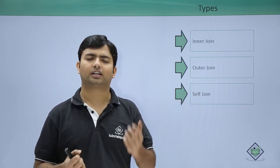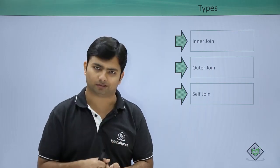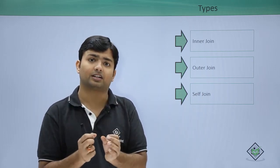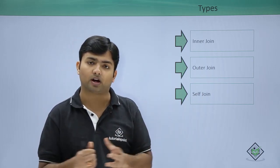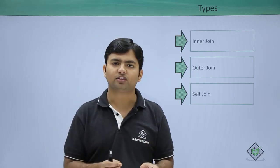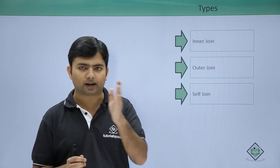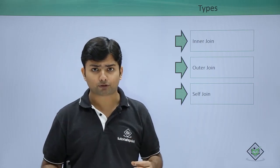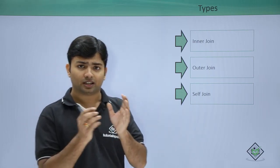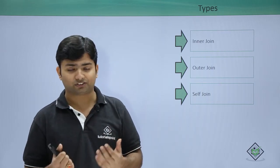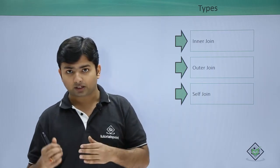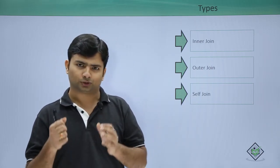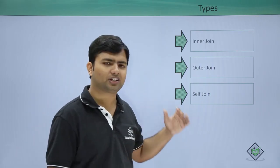A self join is a join where a table is joined with itself. You have to logically split the data of one table into two parts. For example, in an employees table you have employee ID and manager ID. Managers are also employees, but we can internally classify employees as managers and workers. Manager details and worker details both reside in the same employees table. Let's see practically how to implement a self join.